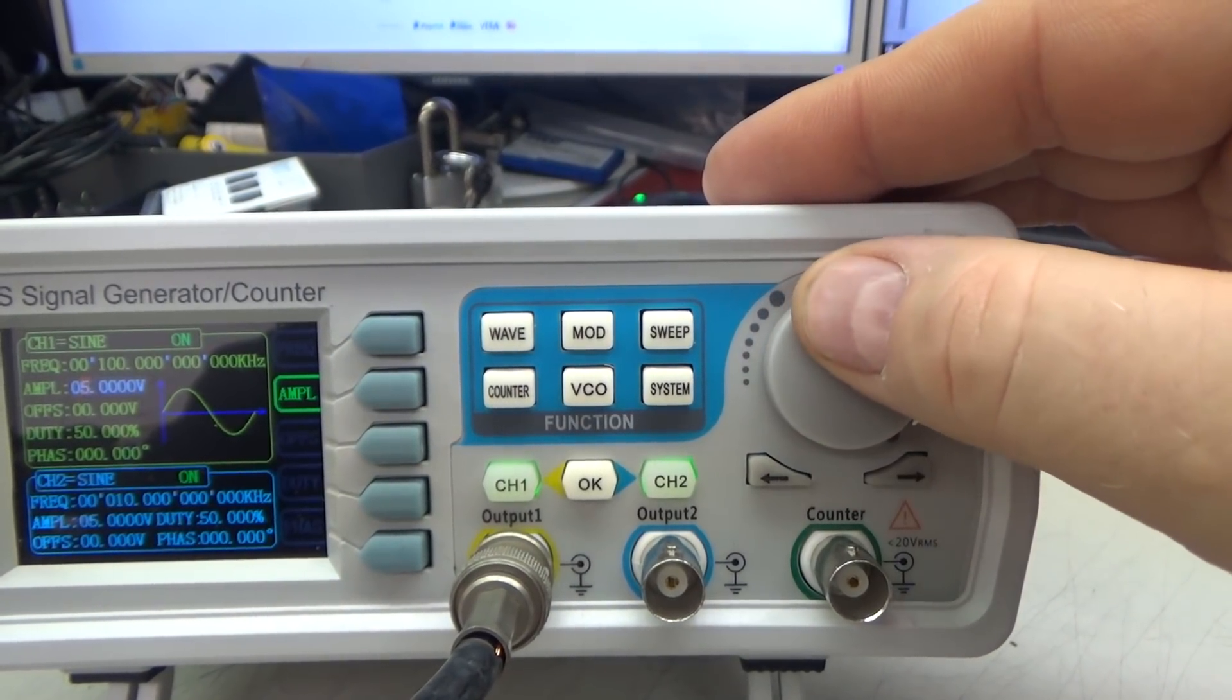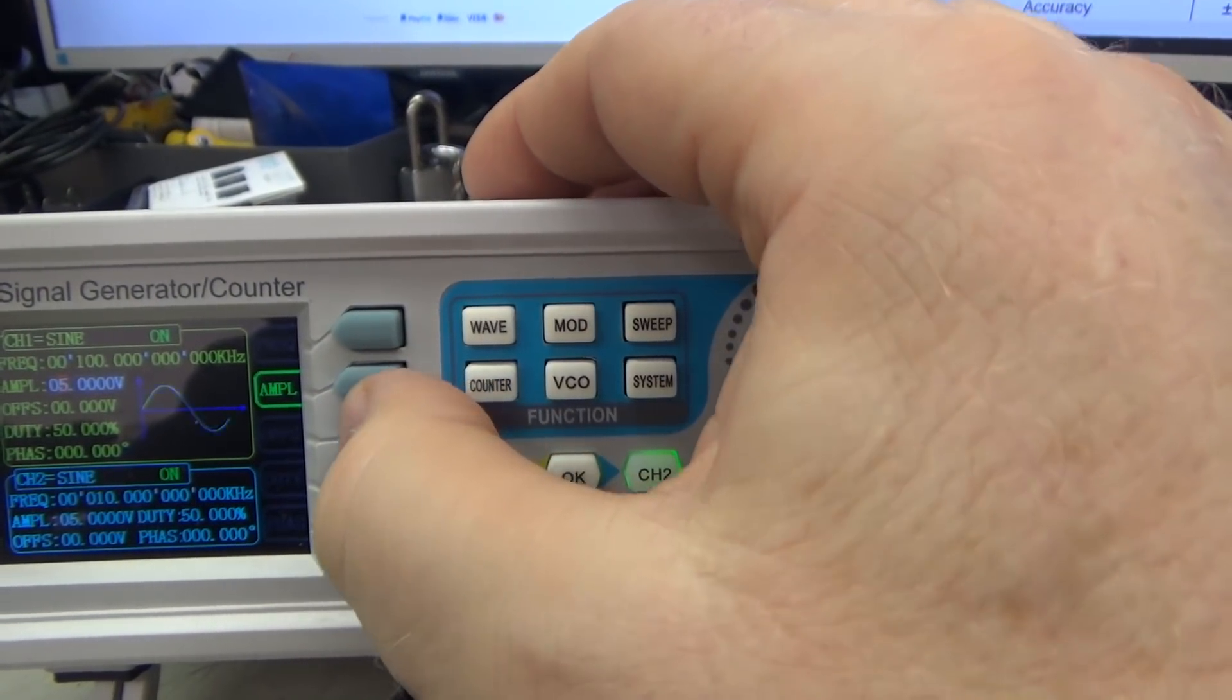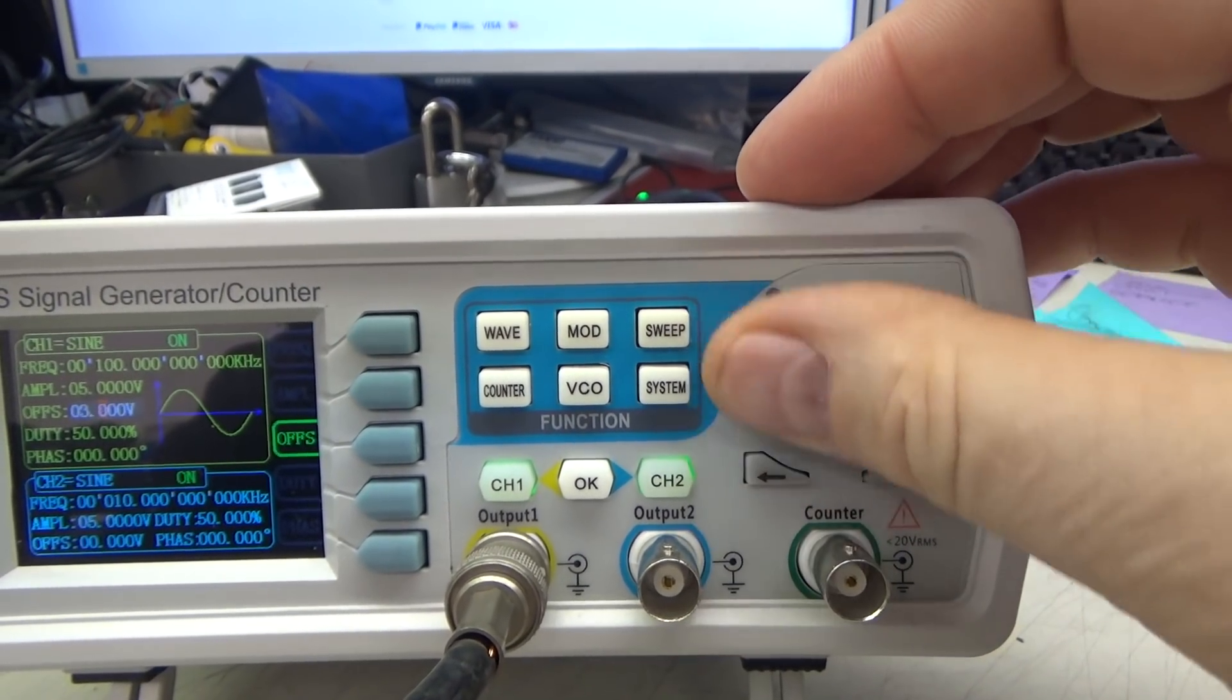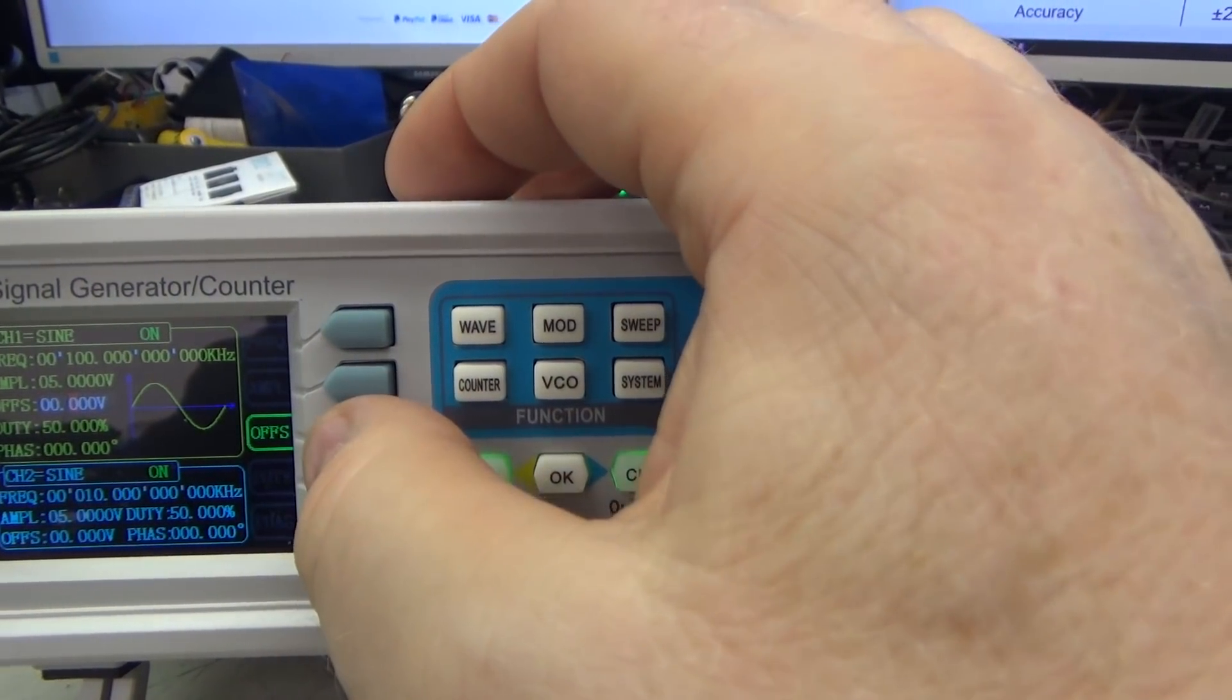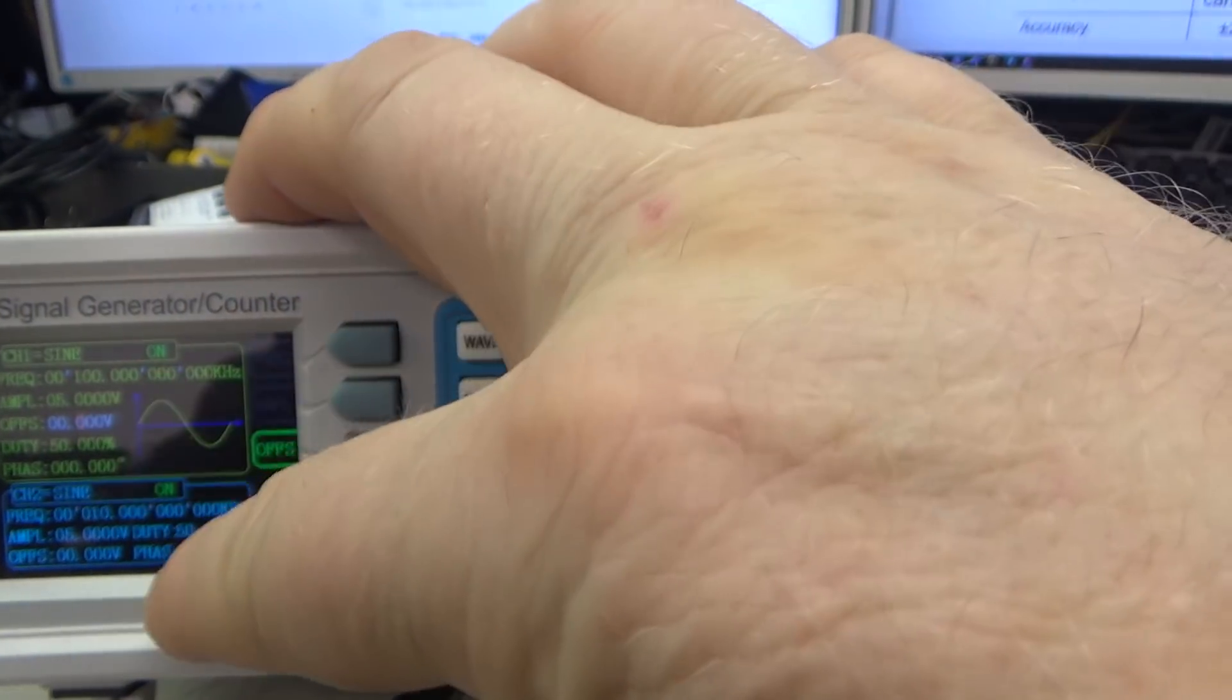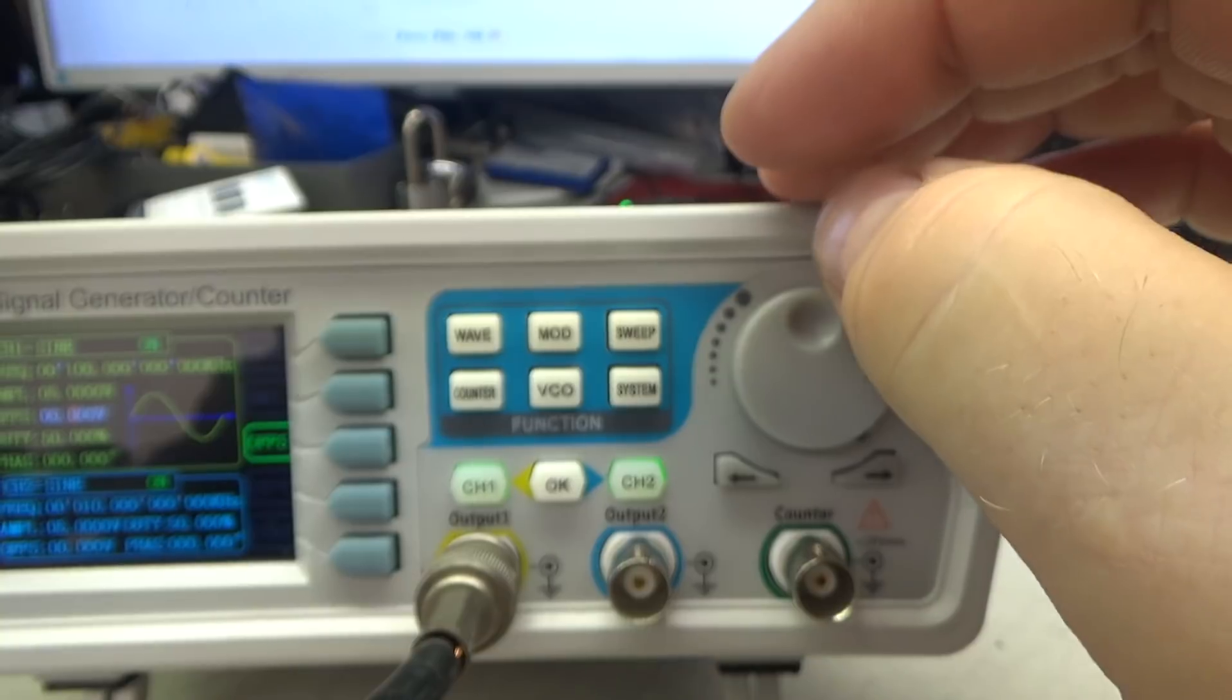So let's leave it here at 5 and you have offset adjust right here which allows you to offset the waveform, DC offset or DC bias. You have duty cycle which doesn't apply to sine waves and phase control which does apply to sine waves and the phase control can be used to adjust between the two channels and you can make either channel primary adjuster by just selecting the appropriate button.